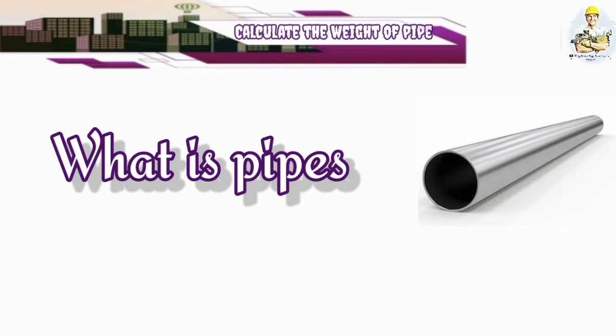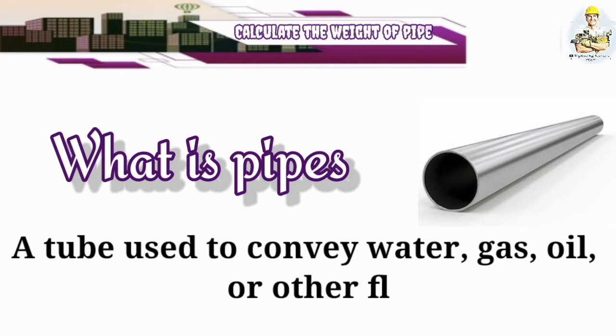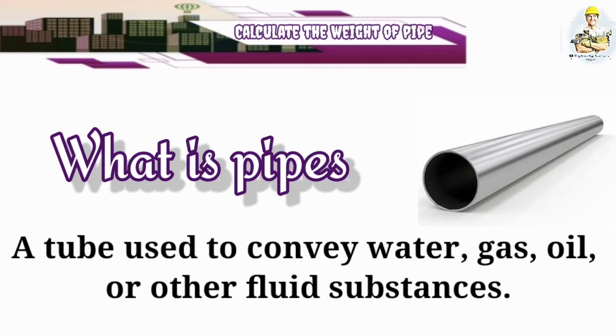What is pipe? A tube which is used to convey water, gas, oil, or other fluid substances. In simple words, a pipe is a tube which transfers or conveys water, gas, oil, or other fluid substances from one location to another location. That's known as pipe.